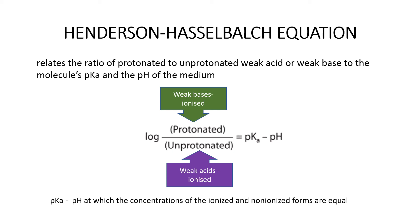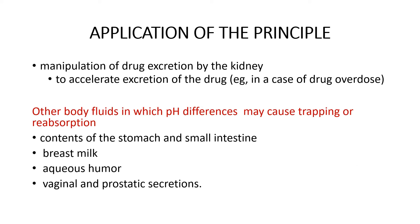What is the application of this equation? It is mainly used in the manipulation of drug excretion. Drugs are filtered by the glomerulus and reabsorbed through the tubules. Whenever we want a drug to be eliminated without reabsorption — for example in cases of drug overdose — we can change the urine pH, either increasing or decreasing it depending on whether the drug is a weak acid or weak base, so that it does not get reabsorbed and gets excreted.